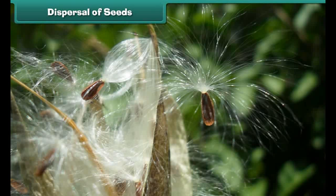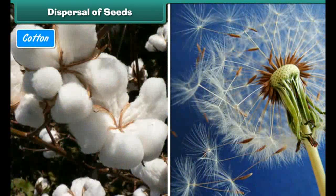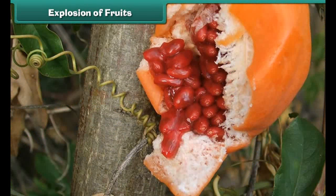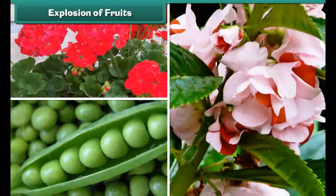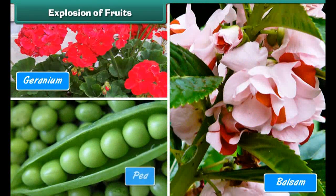Seeds which are light in weight and have wings or feathers are dispersed by wind — for example, cotton, dandelion, and maple. Some fruits, when ripe or dry, burst open and their seeds are thrown away; this process is known as explosion of fruits — for example, geranium, balsam, and pea.